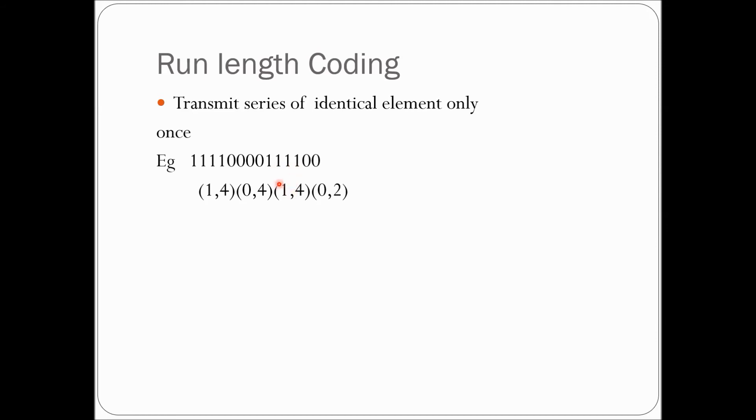Then again we will check the next one. It is also repeated 4 times continuously. So 1,4 and next the last bit is 0. It is repeated 2 times. So likewise we write in the case of run length coding.